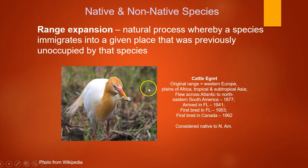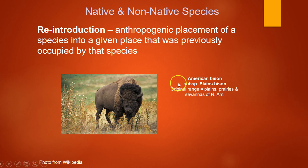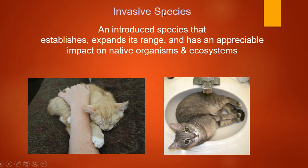Sometimes species come into a new area on their own — that's called a range expansion. The cattle egret started in Europe, Africa, and Asia, flew across the Atlantic to South America, made its way up to Florida, bred there, and is now found all the way into Canada — we consider it native to North America because it arrived on its own. A reintroduction is when a species that was removed is brought back, like North American bison in South Dakota and Kentucky elk.